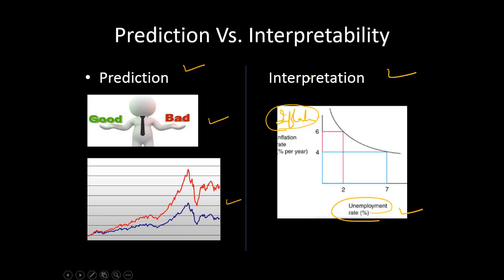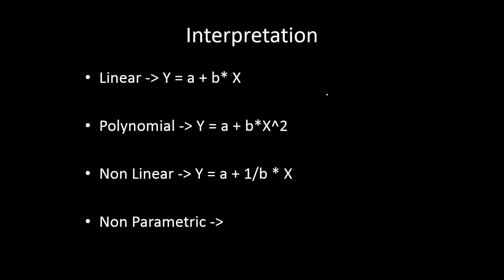That's the basic difference between a model built for prediction and a model built for interpretation. Now let's see how the actual models are chosen based on the objective. Here is a linear model: y = a + bx. Y is a function of x — it's a very simple model where the function f is linear in parameters and easy to interpret. If x equals 1, you can always find out what y is, and if x changes by an amount Δx, you can find out what Δy is.